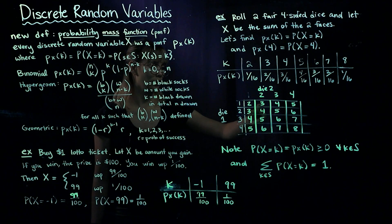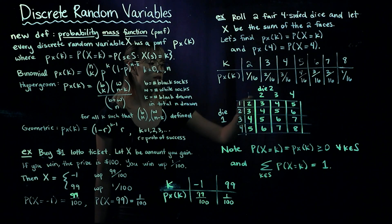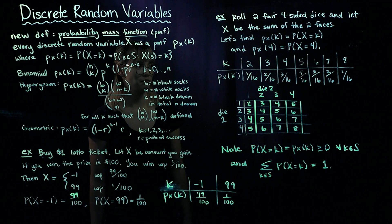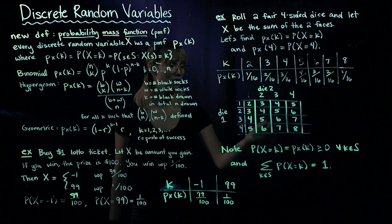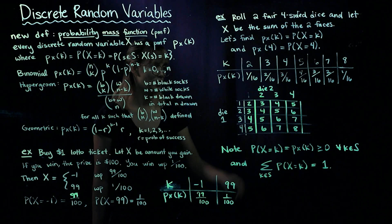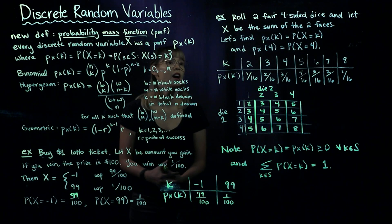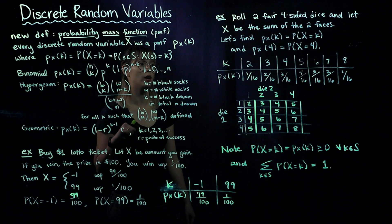For a sum of 3, we have 2 occurrences, so P(X=3) = 2/16. For a sum of 4, we count three occurrences, so P(X=4) = 3/16. We continue this process for all values. This gives us our complete PMF for X, the sum of two fair four-sided dice.